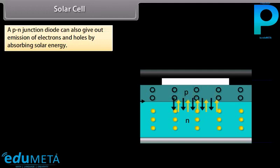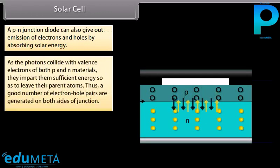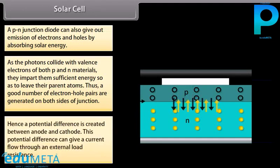Solar energy photons entering from the top glass window easily penetrate up to both sides of the junction. As the photons collide with valence electrons of both P and N materials, they impart sufficient energy for electrons to leave their parent atoms. Thus, a good number of electron-hole pairs are generated on both sides of the junction. Hence, a potential difference is created between anode and cathode, which can drive a current through an external load resistance.